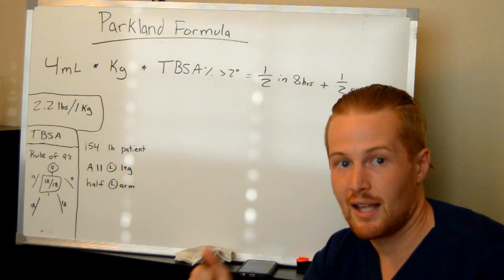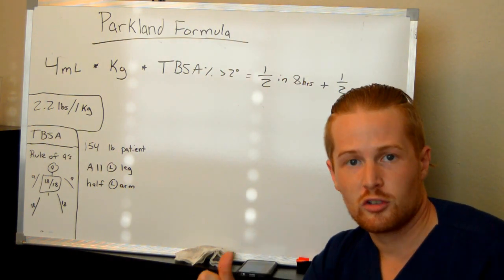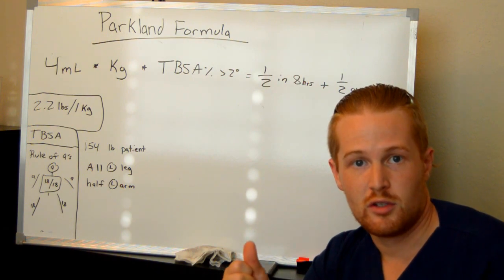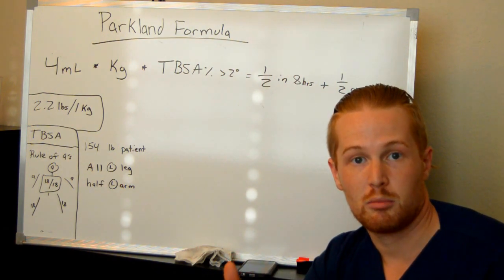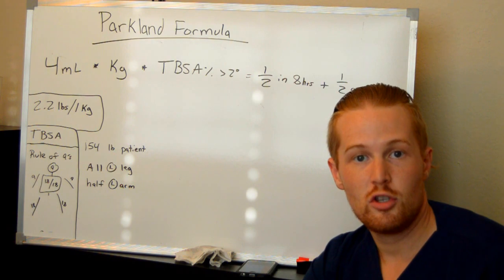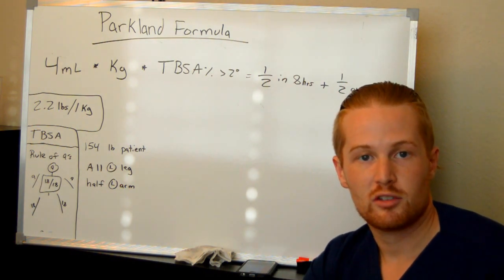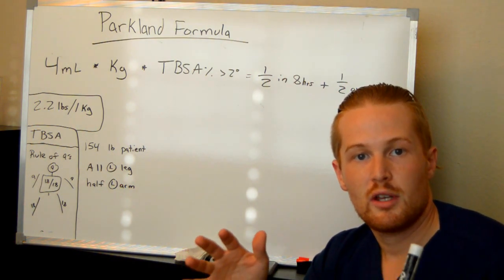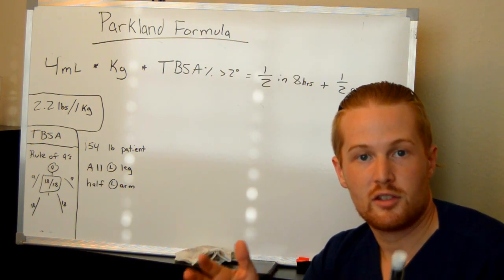And why is this? Well, at the site of the burn, all the cells are breaking down and releasing proteins into the tissues around the blood vessels. And also, there's damage to the blood vessels. So fluid leaks out of the blood vessels and is attracted to those proteins that are in the skin tissues.